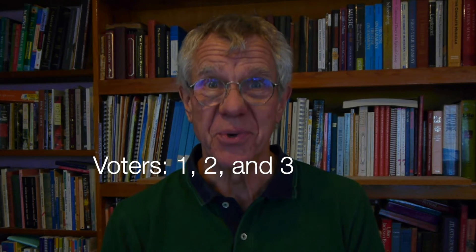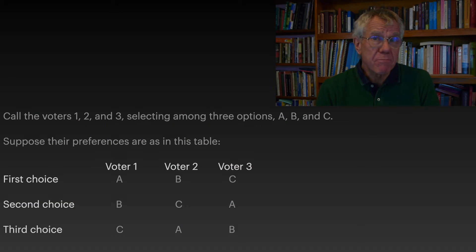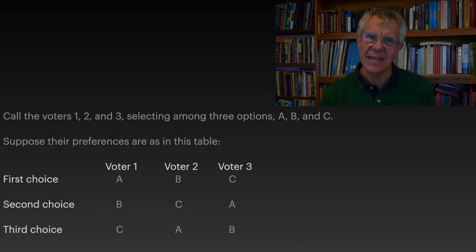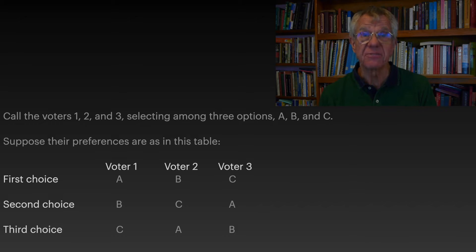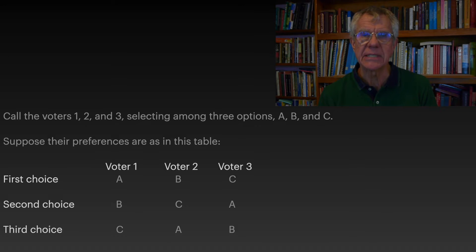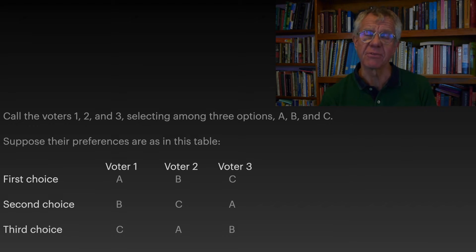Let's call our voters 1, 2, and 3, and our options A, B, and C. Voter 1 has a different preference ordering among those three options: A is first choice, B second choice, C third choice. Voter 2 also has very clearly defined preferences: B is their first choice, C the second choice, A the last choice. And finally, voter 3 prefers C as the first choice, A the second choice, B the third choice.